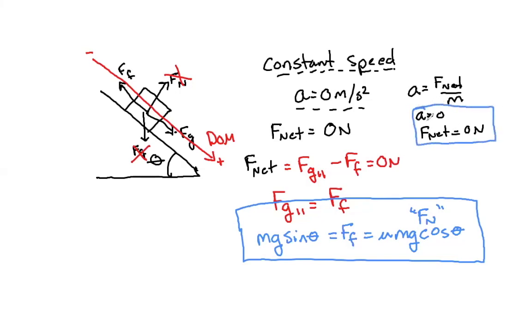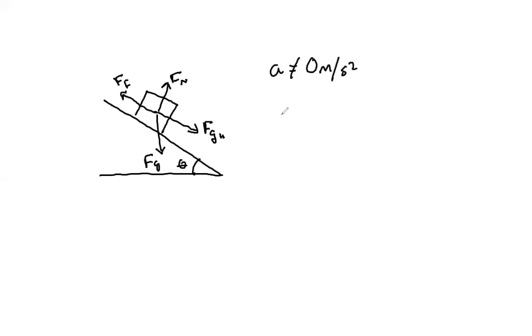Now if it is accelerating, if you are told that there is some acceleration on the incline, it's going to be the same exact problem. The box still has FG parallel, FN, and the force of friction, but now a does not equal zero meters per second squared, so now we're going to have to use a equals F net over m in the DOM.